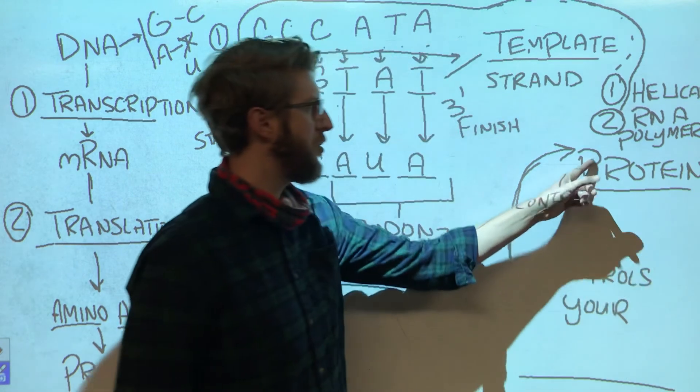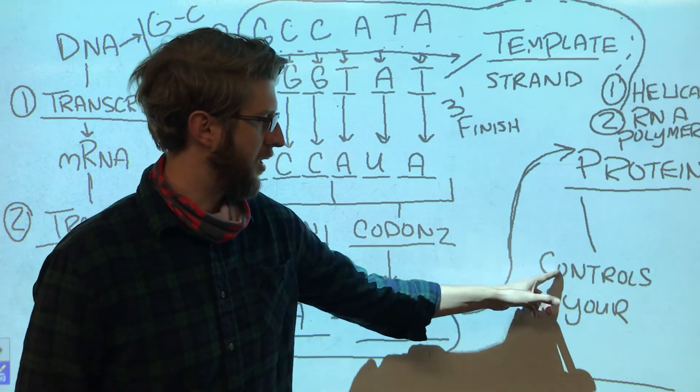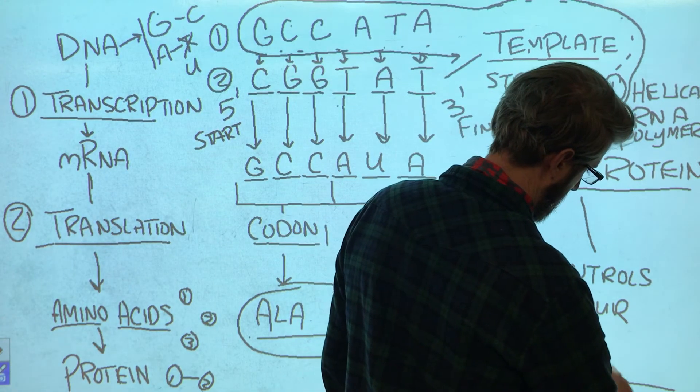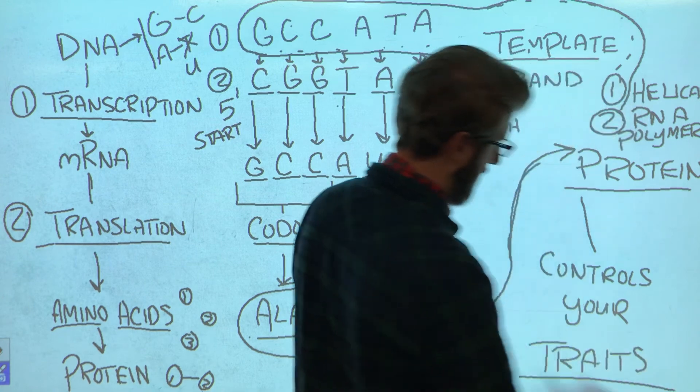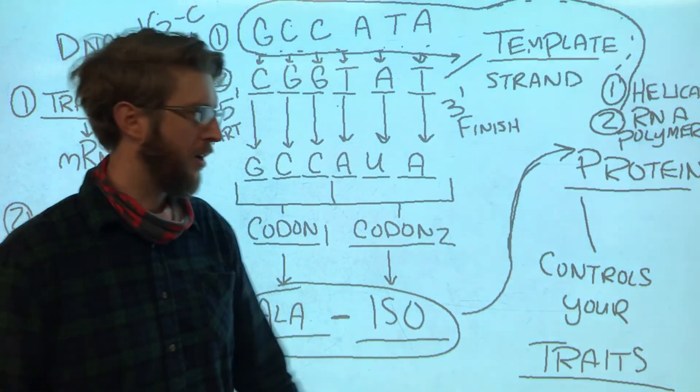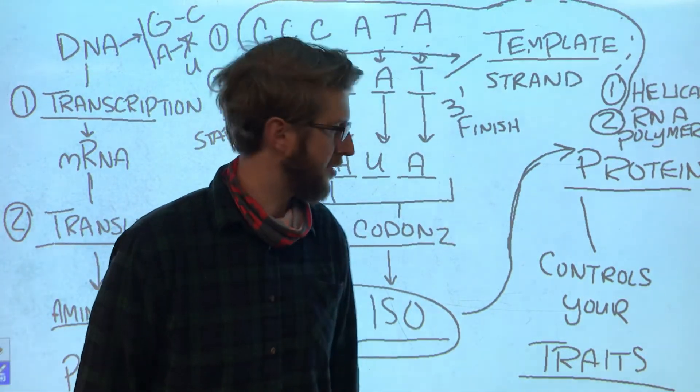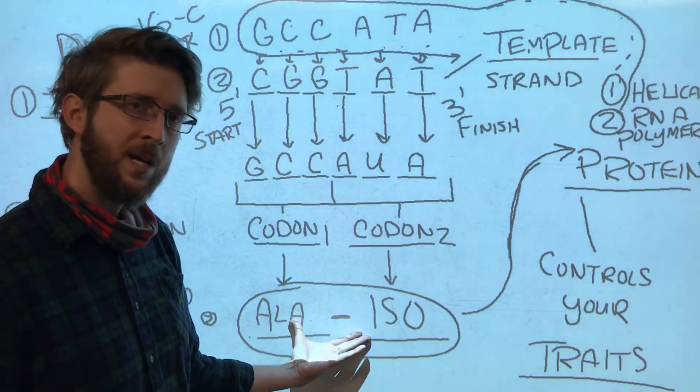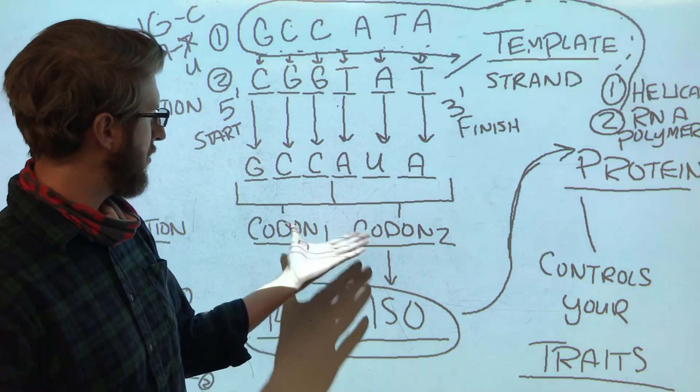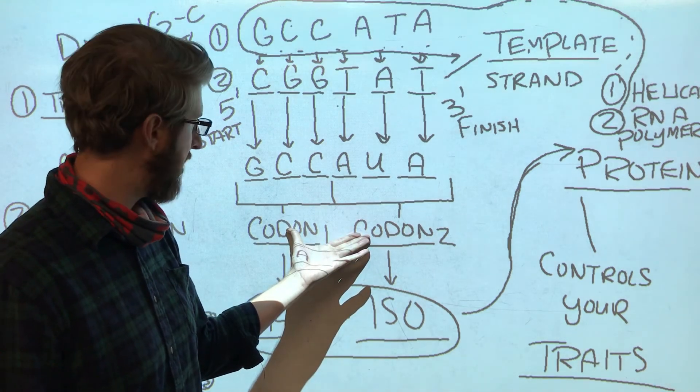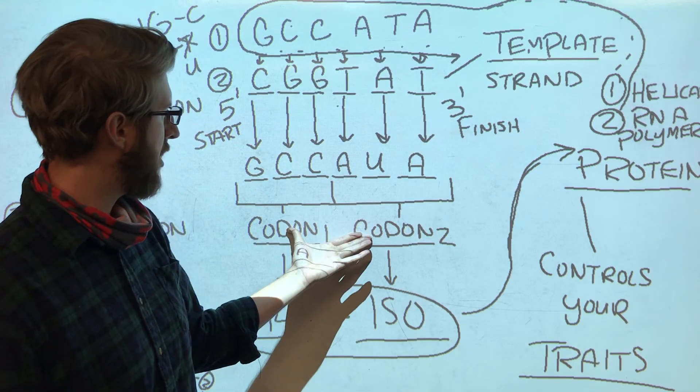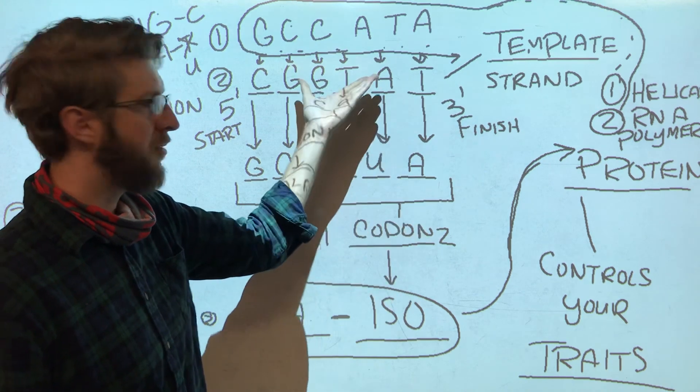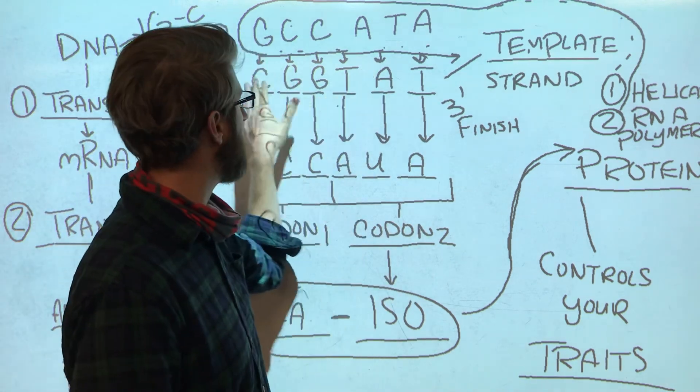And proteins—they control your traits. Traits like hair color, eye color, height, all sorts of things are controlled by proteins, which are made from amino acids, which are made from the information in codons in RNA, which are made from the information in DNA.